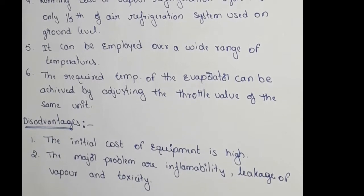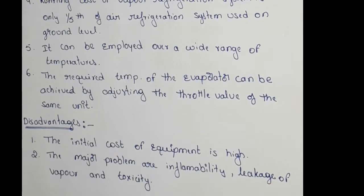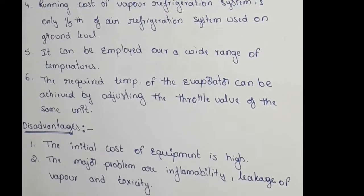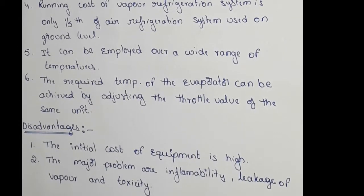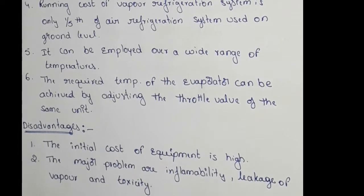The next point is that the required temperature of the evaporator can be achieved by adjusting the throttle valve of the same unit. The evaporator temperature is controlled using a throttle valve, also known as an expansion valve. By adjusting the throttle valve, we can maintain the evaporator temperature.